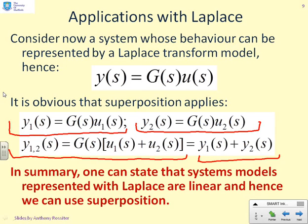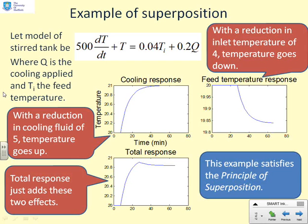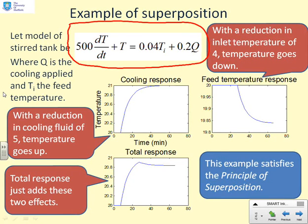Here's a silly example, but one that hopefully you will understand. I've got a system up here: 500 dT by dt plus temperature equals 0.04 Ti plus 0.2 Q. Ti is a feed temperature in this tank. And Q can be cooling, or it could be heating, depending on the system that you've got.